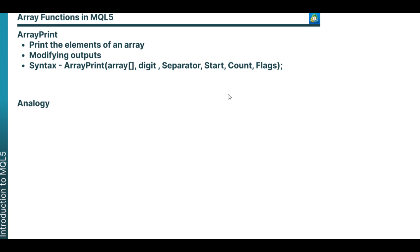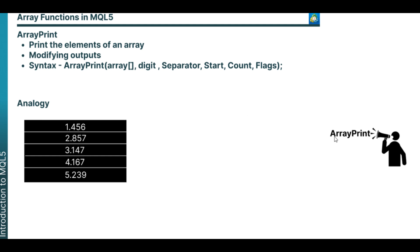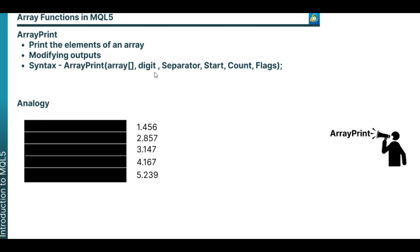I'll be using an analogy to explain the function and the syntax. Imagine you have a box, and in this box you can store similar types of numbers. ArrayPrint is like magical words you can say, and all the numbers in this box will be printed out for you to see. To modify this output, you can use the parameters of this function.